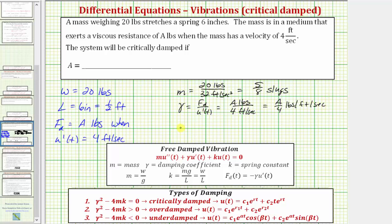And then finally k, the spring constant, is equal to w divided by l, which would be 20 pounds, divided by half a foot, which equals 40 pounds per foot.